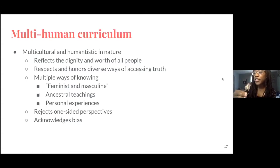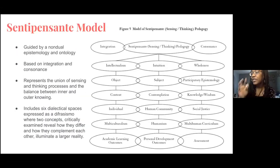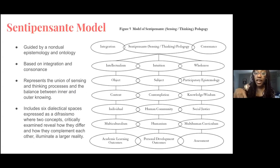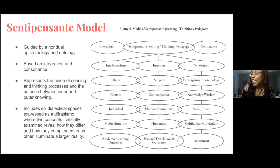She creates six dialectical spaces. I see these six dialectical spaces — the same way that we have six ACRL frames — as ones that we can create a duality with while also moving away from duality. Hers are intuition, subject, contemplation, human community, humanisms, and personal development outcomes. She sees them expressed as a differenceismo, where two concepts that are critically examined reveal how they differ and how they also complement each other, and they can illuminate a larger reality.